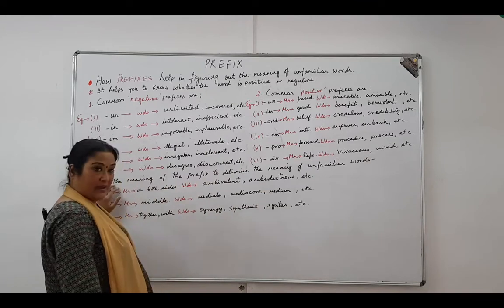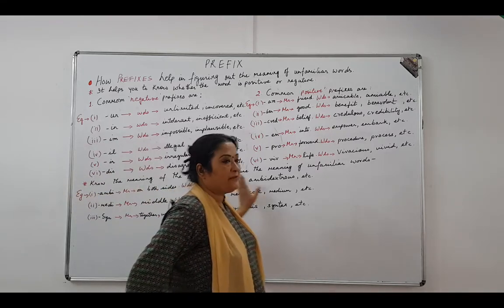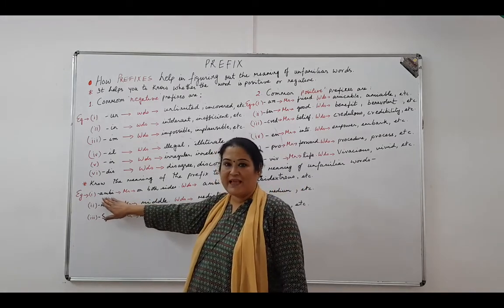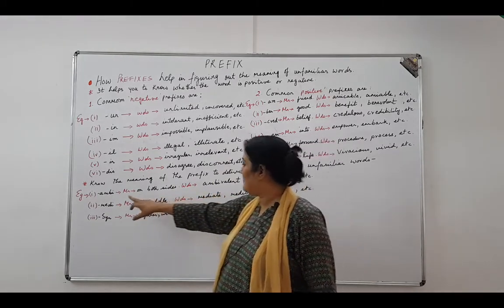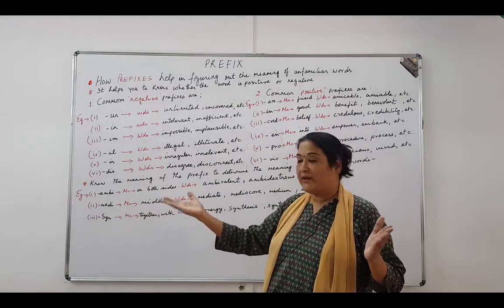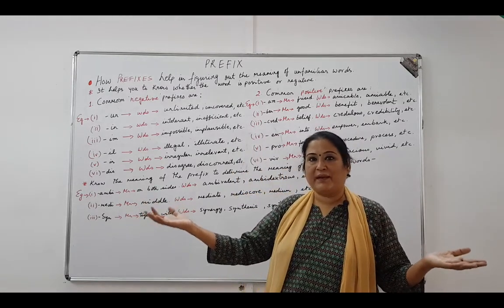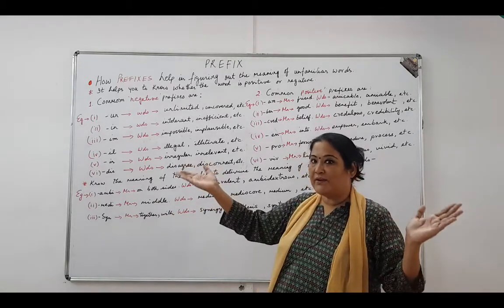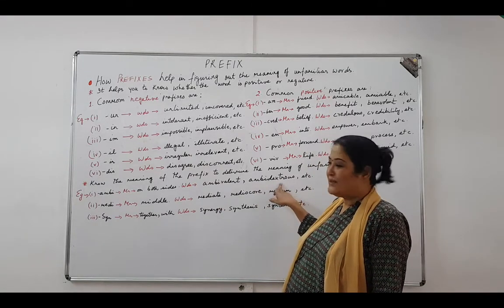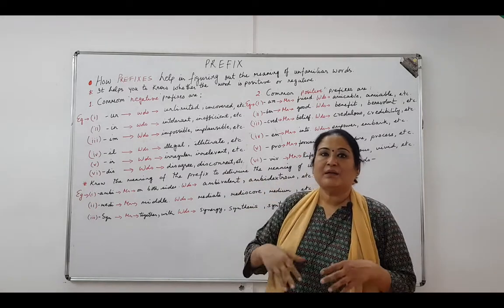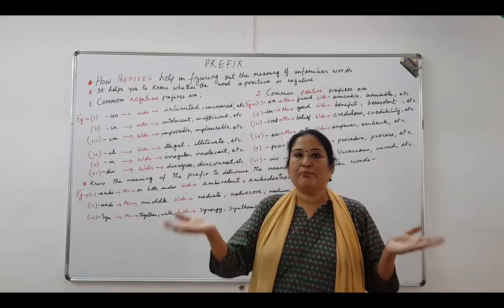The second thing I wish to discuss in this session is how the meaning of prefixes also helps you determine the meaning of unfamiliar words. Look at these prefixes. Suppose you have the prefix 'amb', meaning 'on both sides'. Words starting with 'amb' will naturally have two sides to consider. So 'ambivalent' means having two opposite, conflicting emotions or beliefs at the same time. Similarly, 'ambidextrous' — 'amb' means both and 'dextrous' means skill — describes a person who is able to work proficiently with both hands.